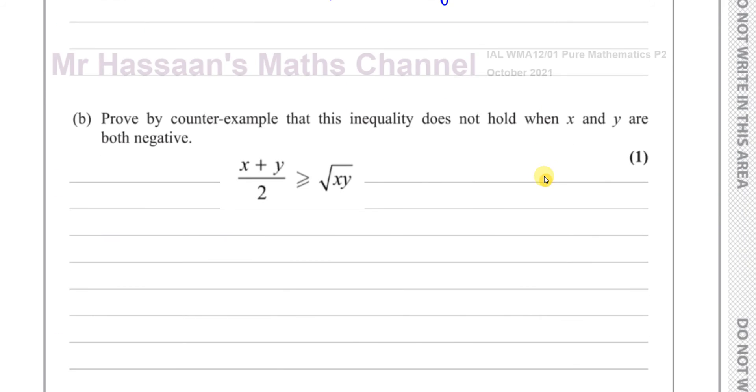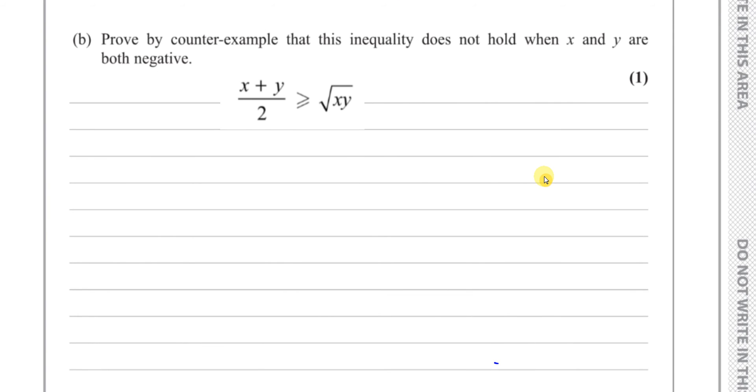9b says prove by counter example that this inequality does not hold when x and y are both negative. So you've got to show just one example when x and y are both negative that this doesn't work. So all we do is, for example, let's choose a value of x, say, negative 9 and, say, negative 4. I just chose random negative values, negative 4 for y. Random values for x and y.